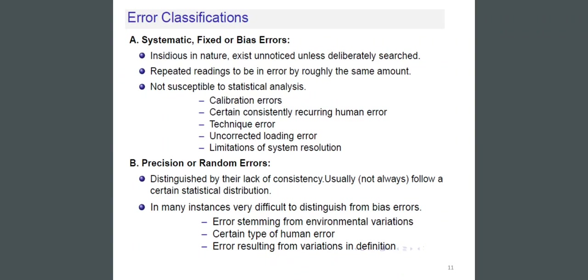Incidents in nature exist unnoticed unless deliberately searched. Repeated readings tend to be in error by roughly the same amount, and are not susceptible to statistical analysis. Examples include calibration errors, certain consistently recurring human errors, technique errors, corrected loading errors, and limitations of system resolution.